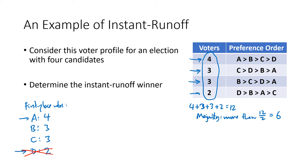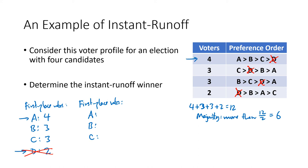After eliminating D, we recalculate with only A, B, and C. The four voters who liked A still vote A; the three who liked C still vote C; the three who liked B still vote B; and D's two voters now vote for their second choice, B. So B now has five first place votes. B leads but still doesn't have a majority — we need seven or more — so we eliminate C, the candidate now with the fewest votes.